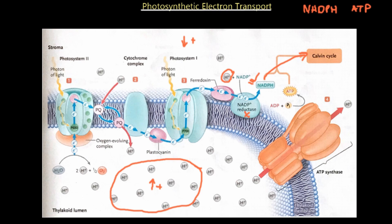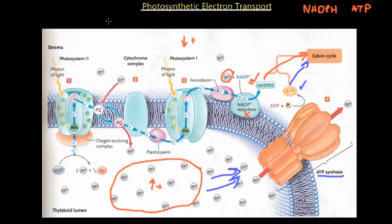To see how ATP is produced: because we've built up this proton motive force, the protons naturally want to diffuse to the other side of the membrane, where there is a lower proton concentration compared to the lumen side. As protons move to the stroma, they pass through a protein called ATP synthase, which catalyzes the reaction of ADP and phosphate to produce our ATP molecule. The ATP is then moved to the Calvin cycle.